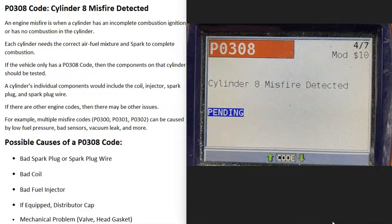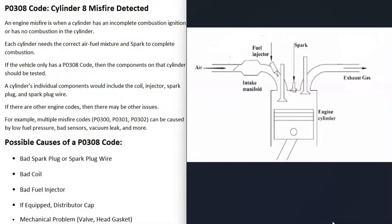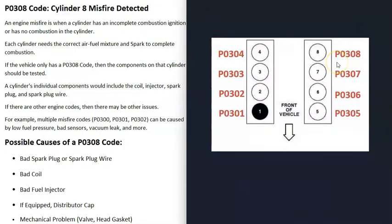Today I'm talking about a P0308 code — what it is and how you go about fixing it. The P0308 code is a cylinder 8 misfire detected. Basically, every cylinder inside the engine needs to have the correct air-fuel ratio mixture, and at the right time the spark plug sends a spark to ignite this mixture, creating a small explosion that sends the piston down and keeps the engine running. When you get a misfire, something's gone wrong — this explosion is not happening, or it's happening inconsistently.